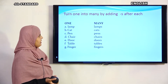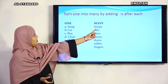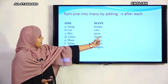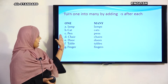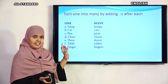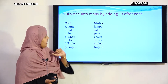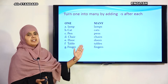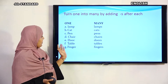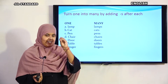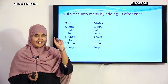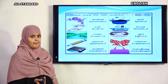Here, we have already added 's'. Lamp — lamps. Cat — cats. Pen — pens. Chair — chairs. Door — doors. Table — tables. Finger — fingers. One finger, many fingers — 'ungli' and 'ungliyan'. When there is one, we don't add 's'; when there is more than one, we add 's'.